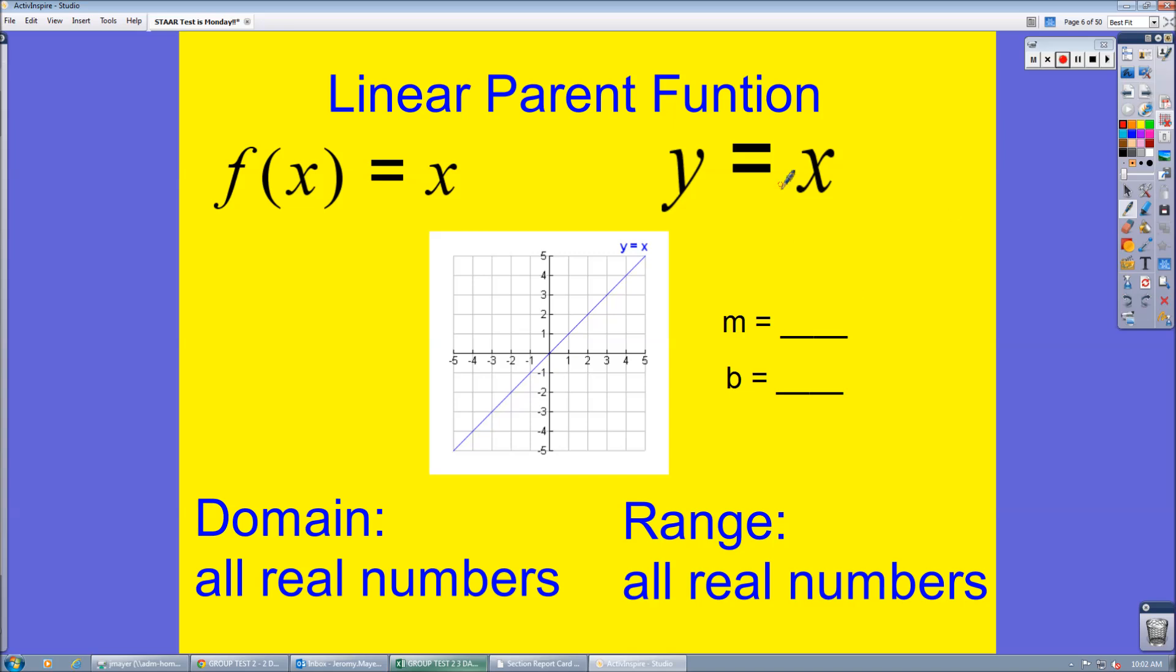The linear parent function, memorize it. Y equals X. The number in front of X is the slope, it's 1. You want to do a visual inspection, you can see it crosses the y-axis at 0. Or since there isn't the letter B there, it's 0, it's nothing.